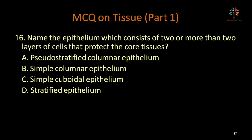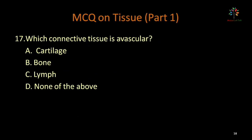Name the epithelium consisting of two or more layers of cells that protect core tissues — options: pseudo-stratified columnar epithelium, simple columnar epithelium, simple cuboidal epithelium, stratified epithelium. Simple epithelium has only one layer, so options B and C are incorrect. Pseudo-stratified columnar epithelium has one layer but appears multi-layered — it's a fake stratified epithelium. Stratified epithelium has two or more layers. Correct option is stratified epithelium.